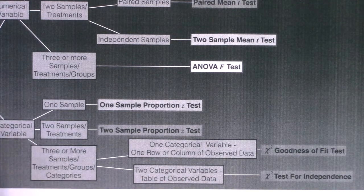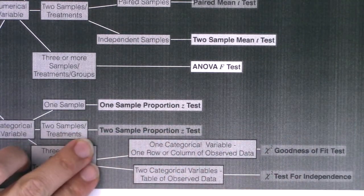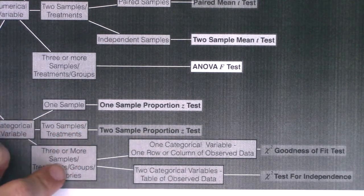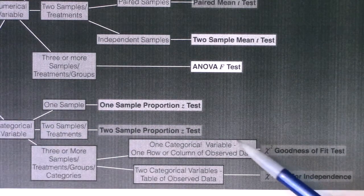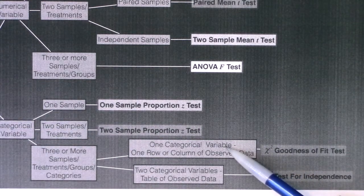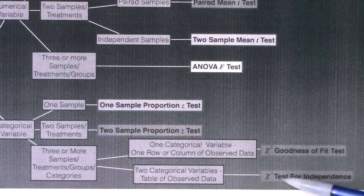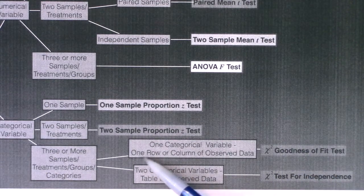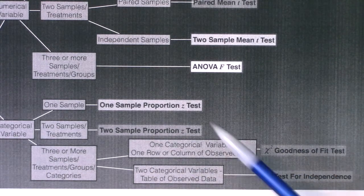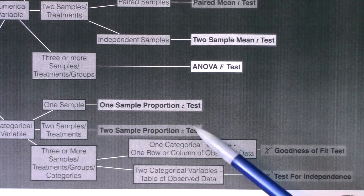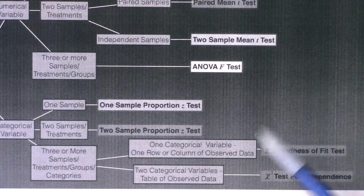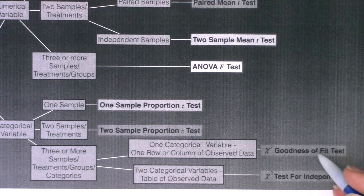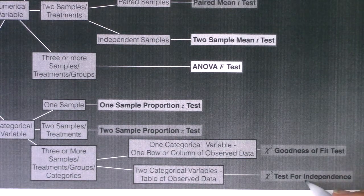In Chapter 11, we're in these two branches of the tree diagram — three or more samples, treatments, groups, or categories. Then we decide: did we have one categorical variable or two categorical variables? That tells us which test to run. Another way to look for that: did you have one row or one column of observed data, or do you have a table — like a two-by-three or a four-by-five? We'll do the GOF tests first, then the tests for independence.